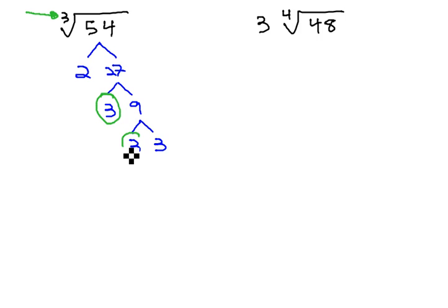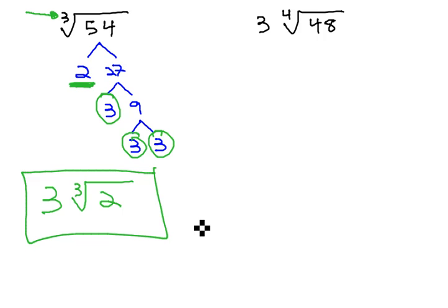Here we have a triplet of 3's. This means outside of the cube root, don't lose the index, we need a 3. And left inside the radical is a 2. This becomes our simplified result. The cube root of 54 is the same as 3 times the cube root of 2.